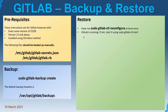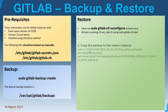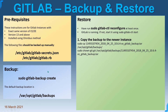Before restoring any backup in GitLab, there are some things to consider. First, the 'gitlab-ctl reconfigure' command must be performed at least once, and make sure GitLab is running. Once that is done, you need to copy the backup file to the '/var/opt/gitlab/backups' location. It is also important that the backup file you are trying to restore should be owned by the git user for the restoring purposes.